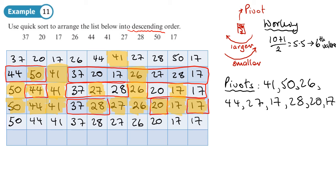That just leaves 37, which hasn't been chosen as a pivot yet. The next pivot is 37. Highlighting everything chosen as a pivot so far, 37 then pivots around itself. Since every number has now been chosen as a pivot, the sort is complete.